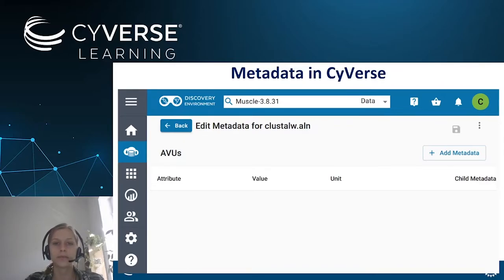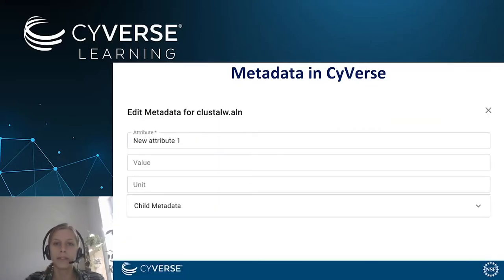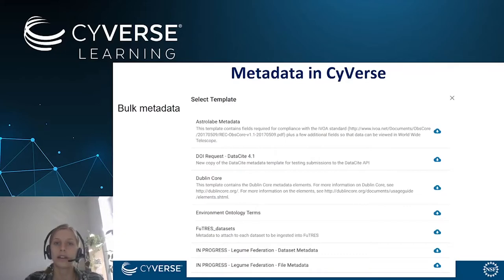In the metadata menu you can see that the metadata in CyberS are stored in the attribute value unit format. On the right-hand side you have a button to add metadata. In this menu you can type in the metadata for your file in the attribute value unit format. In addition, you can also select or add child metadata to your files. Apart from attaching metadata to single files, it is also possible to attach metadata to multiple files at once with the bulk metadata function. In our instructions we will show you in detail how this works.